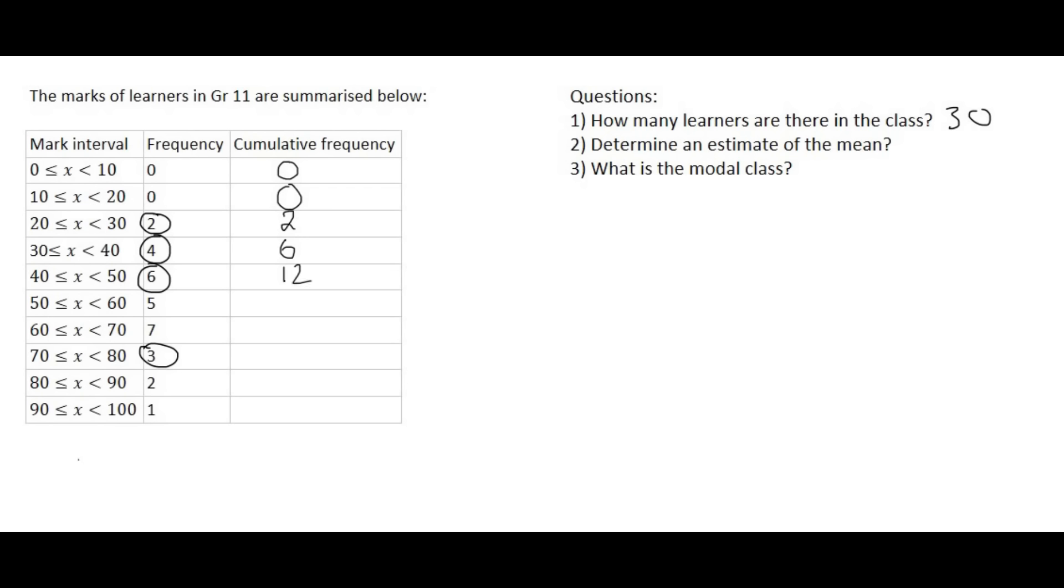Here we're going to put a 12 because how many people have we counted up till that point? Well it was two people there, four people there and six people there. Then we're going to add another five so that's 17. Then we're going to add another seven that's 24. We'll add three that's 27. Add two that's 29 and add one that's 30. So your cumulative frequency is the total up till that particular point.